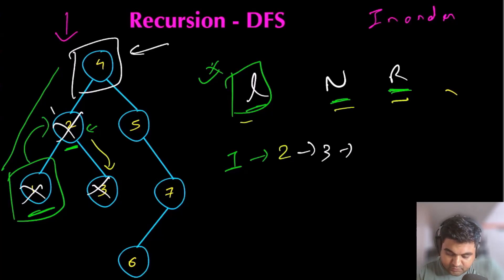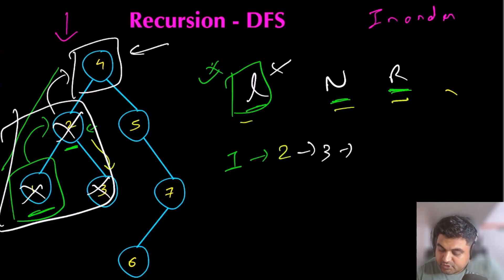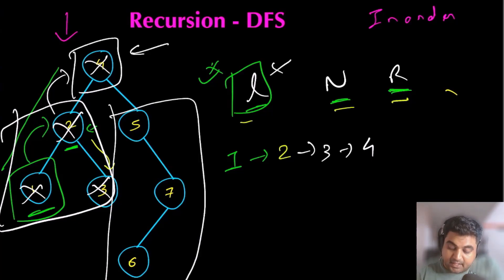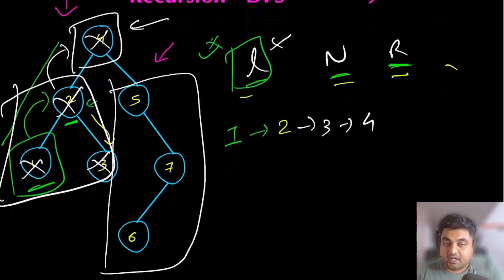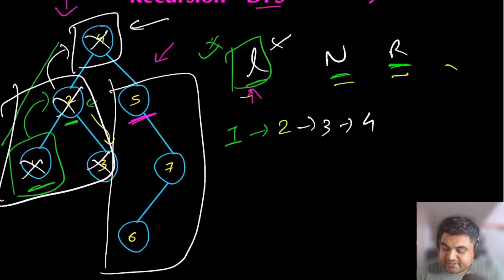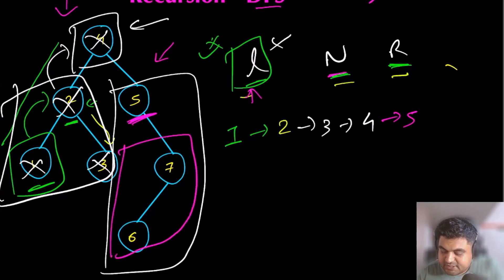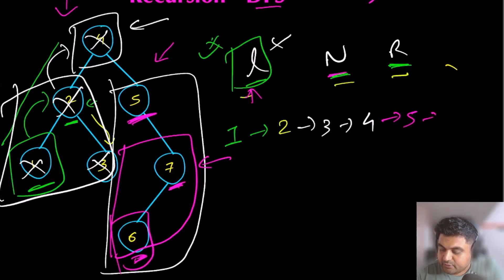After visiting node three, we've taken care of all three nodes under node two, and we go back to the root node. We mark node four as visited since the entire left subtree has been handled. Now for the right subtree — we treat it as a tree on its own. For node number five, it has no left subtree, so we visit node five itself. Then for the right subtree of node five, we visit node seven and node six. Node seven has a left child which is node six, so we visit node six first, then backtrack and visit node seven.